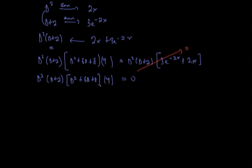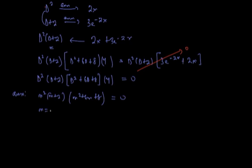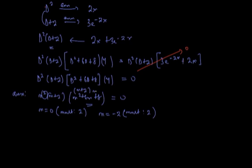This is now a homogeneous equation. The auxiliary equation is m²(m+2)(m² + 6m + 8) = 0. Solving this, we have m = 0 with multiplicity 2, and m = -2 with multiplicity 2, because factoring m² + 6m + 8 gives (m+2)(m+4), producing a second m+2 factor.